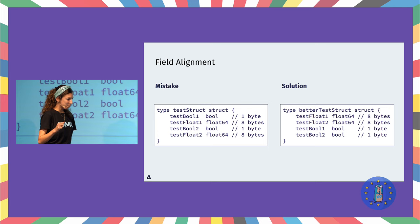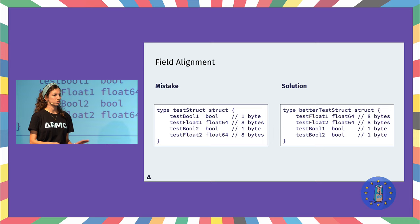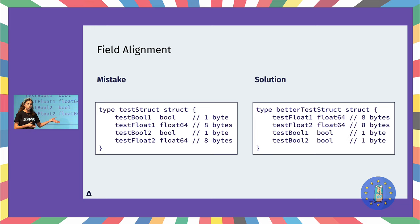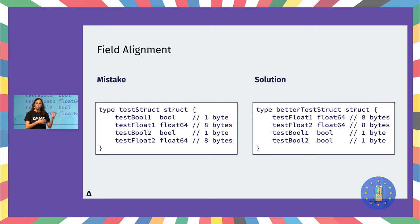Our first tip. One of the first things we do when starting a new application is define our structures and objects. We'll write a structure we're going to use throughout the whole program, and we'll probably define it in a way that makes sense logically — that other people will read and understand. The order of the fields will somehow represent the importance of those fields. But I want to introduce something else: the order of the fields also matters memory-wise.